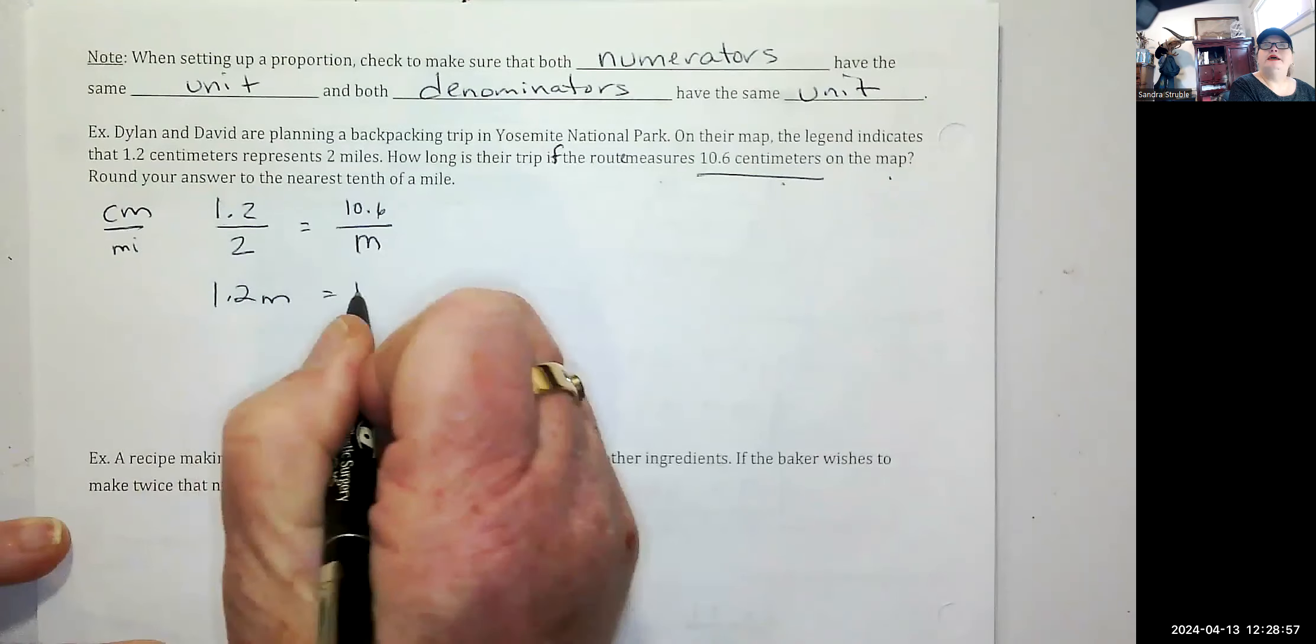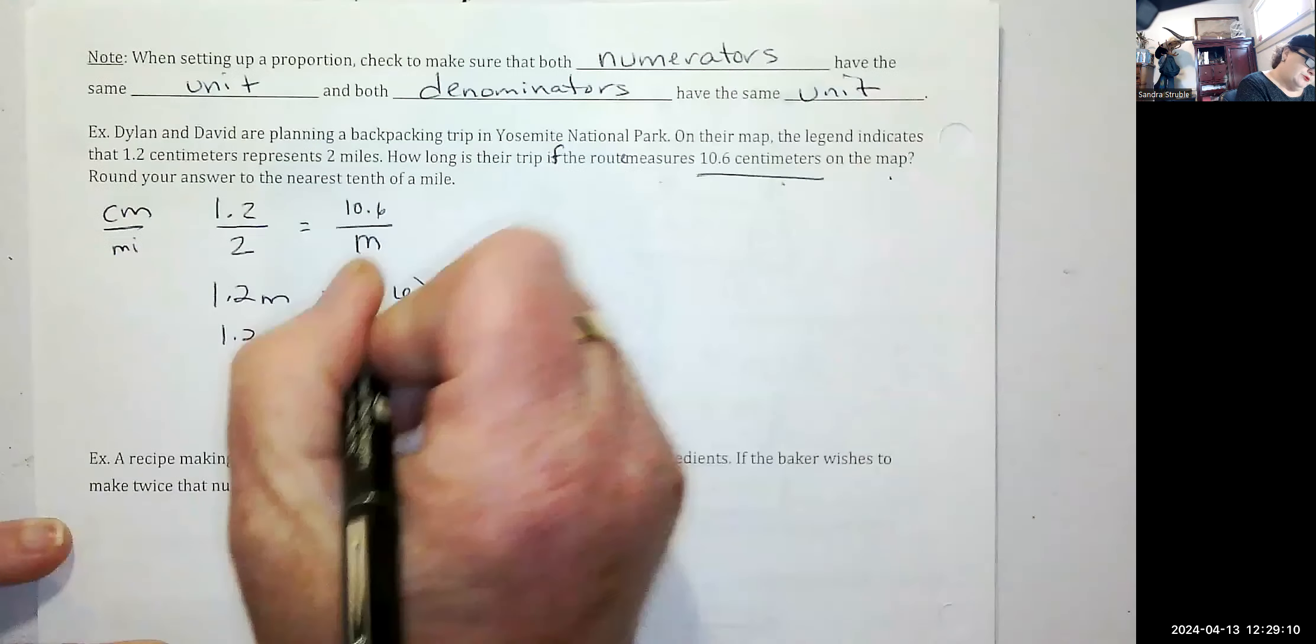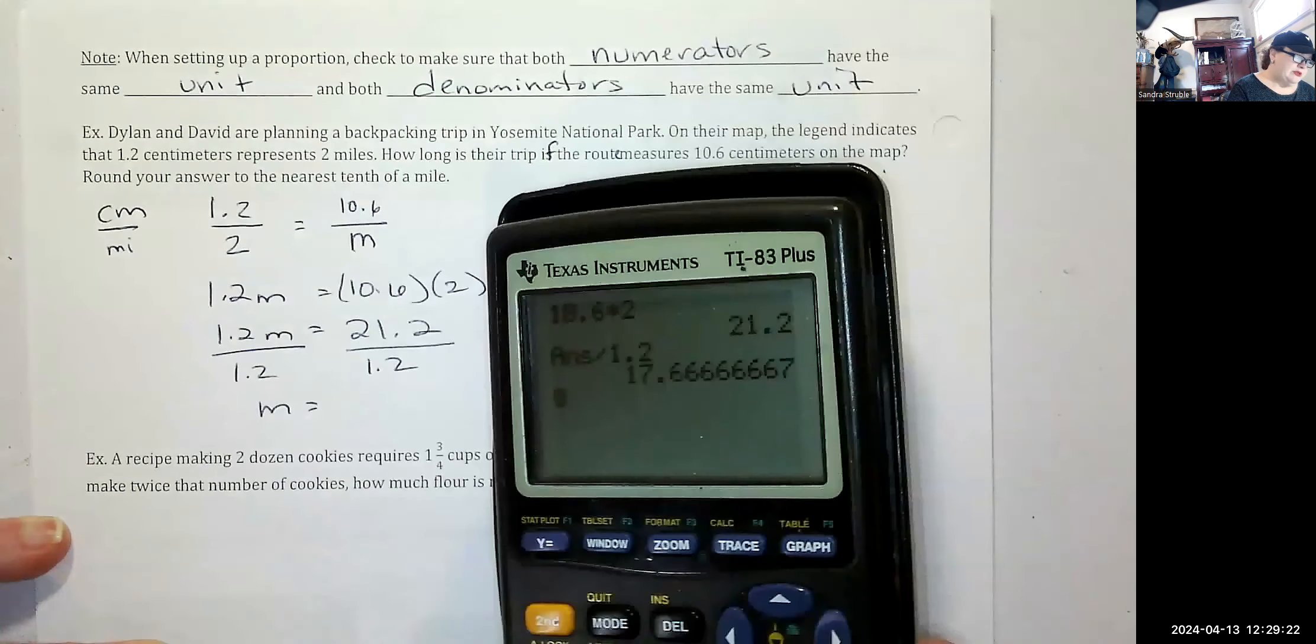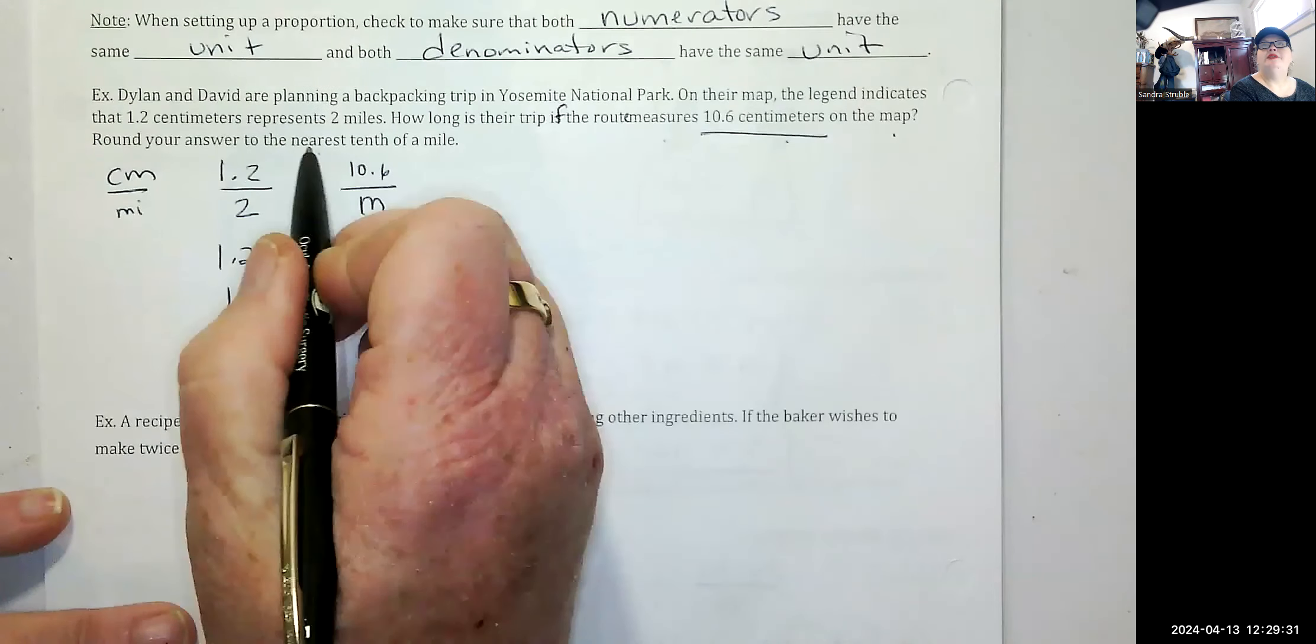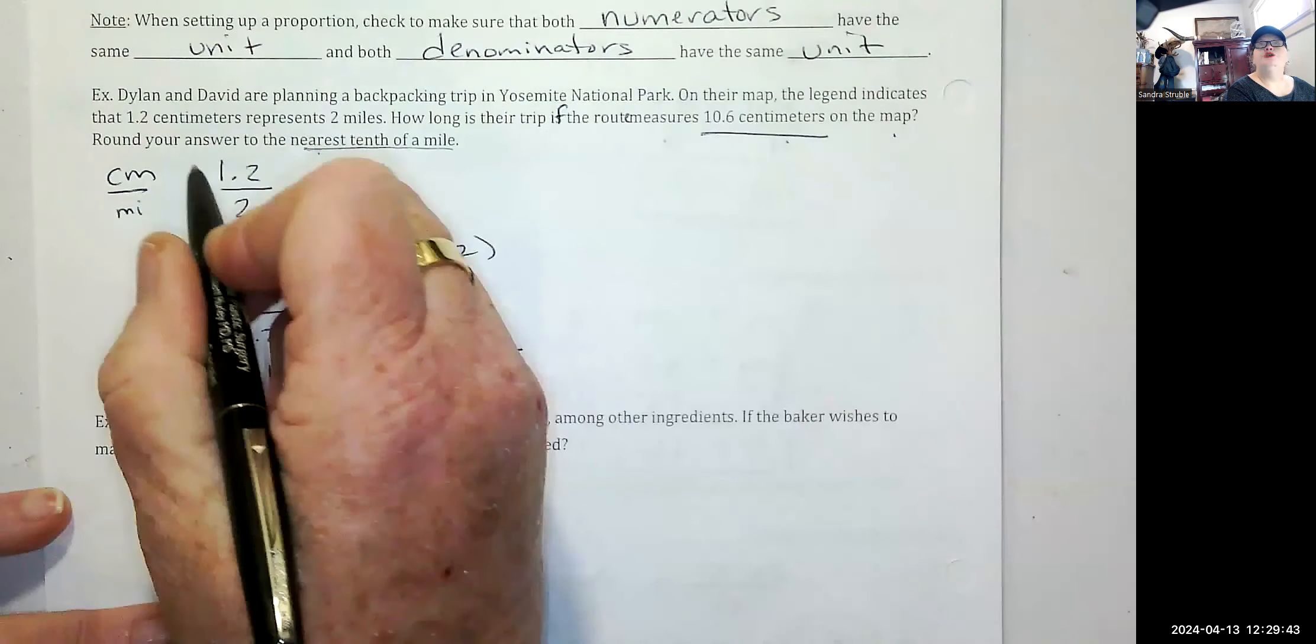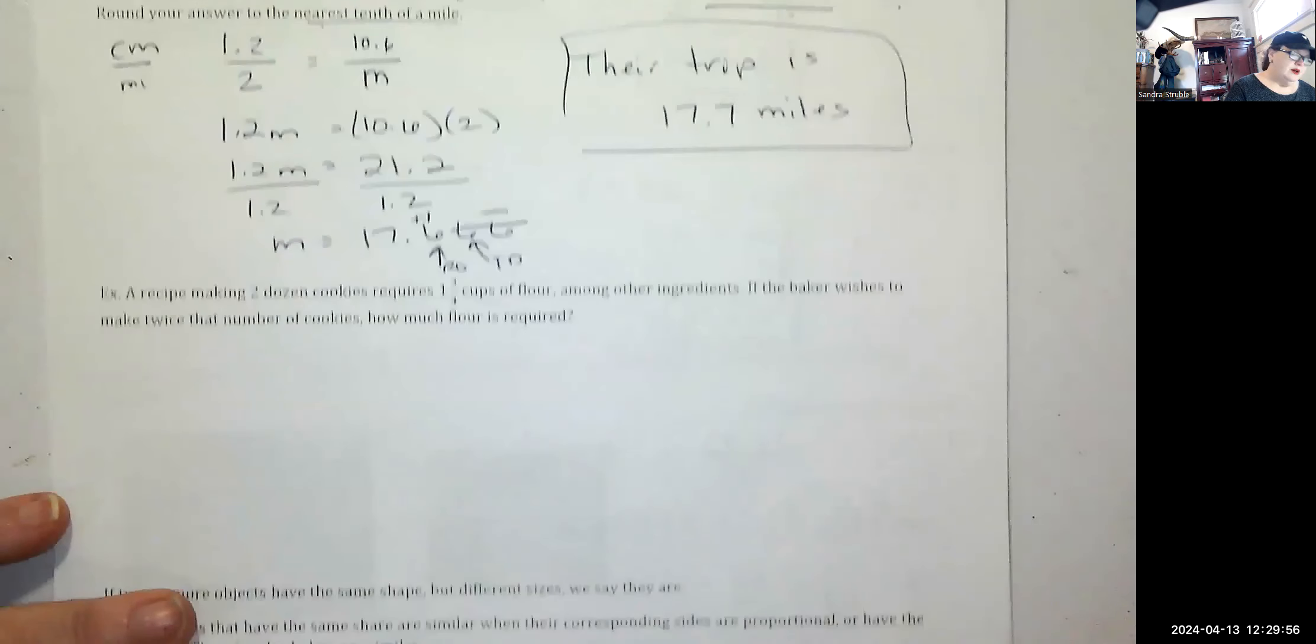1.2 times M is equal to 10.6 times 2. So 1.2M, 10.6 times 2 is 21.2. Solving for M, I'm going to divide both sides by 1.2 to find our miles. And I got 17.6 continuous. But I need to round this to the nearest tenth of a mile. So this is my rounding digit. This six is my test digit. It is greater than five. So I'm going to add one to this one and get rid of the rest. So how long is their trip? Their trip is 17.7 miles. About. It's not exact.